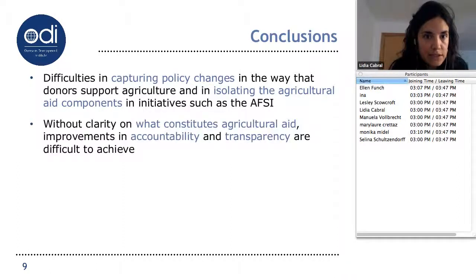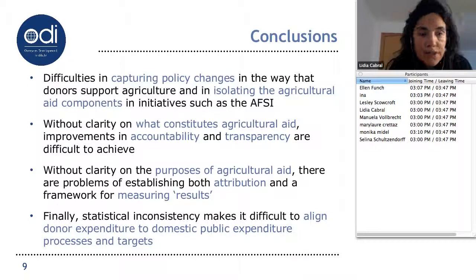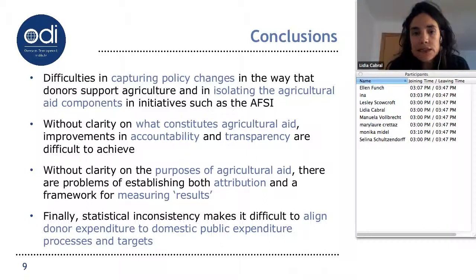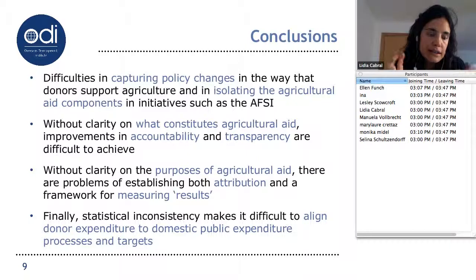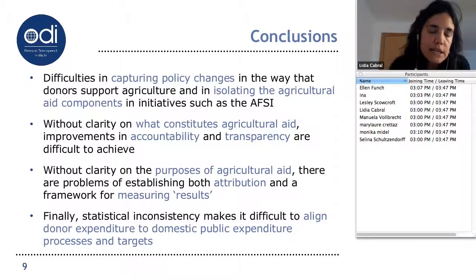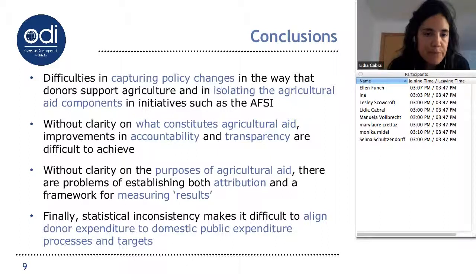To conclude, there are difficulties in capturing policy changes in how donors are supporting agriculture, and in isolating the agricultural aid component in initiatives such as the ACCE. Without clarity on what constitutes agricultural aid, improvements in accountability and transparency are very difficult to achieve. And without clarity on the purposes of agricultural aid, there are problems in establishing both attribution and a framework for results. The notion of agricultural development and food security bundles together quite different purposes: agricultural production, rural livelihoods, and emergency relief — bringing these together can make the results framework quite confusing.